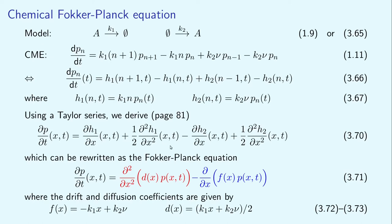The first two terms correspond to the first two terms in the master equation, and the remaining two terms correspond to the other two terms in the master equation. Rearranging these terms, we derive the chemical Fokker-Planck equation, where drift and diffusion coefficients are given by equations 372 and 373.